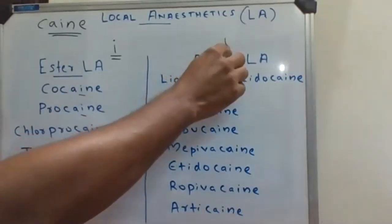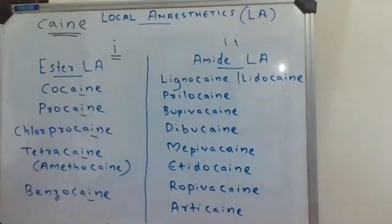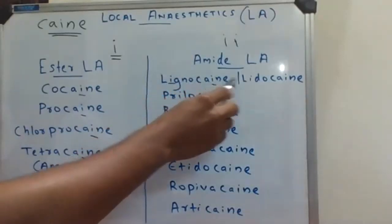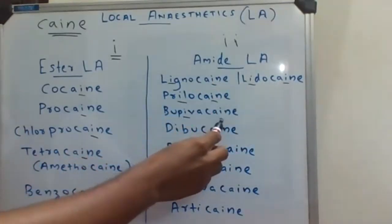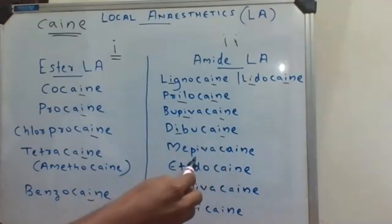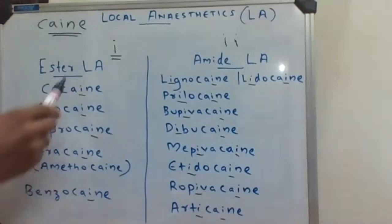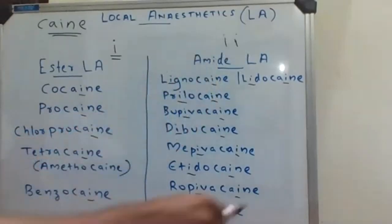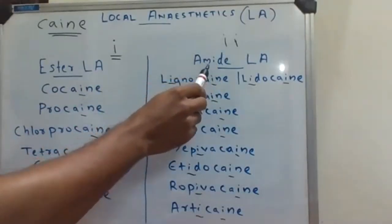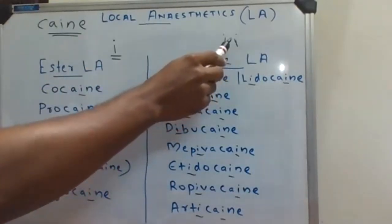However, if there are two I's in the name of the drug, it belongs to the amide local anesthetic category. For example: lignocaine has two I's, lidocaine also has two I's, prilocaine two I's, bupivacaine two I's, dibucaine two I's, mepivacaine two I's, etidocaine two I's, ropivacaine two I's, articaine two I's. So in short: one I = ester local anesthetic; two I's = amide local anesthetic. You can remember this from the word 'amide' itself — amide has one extra I, whereas 'ester' doesn't have an I. That extra I is reflected in the drug names.